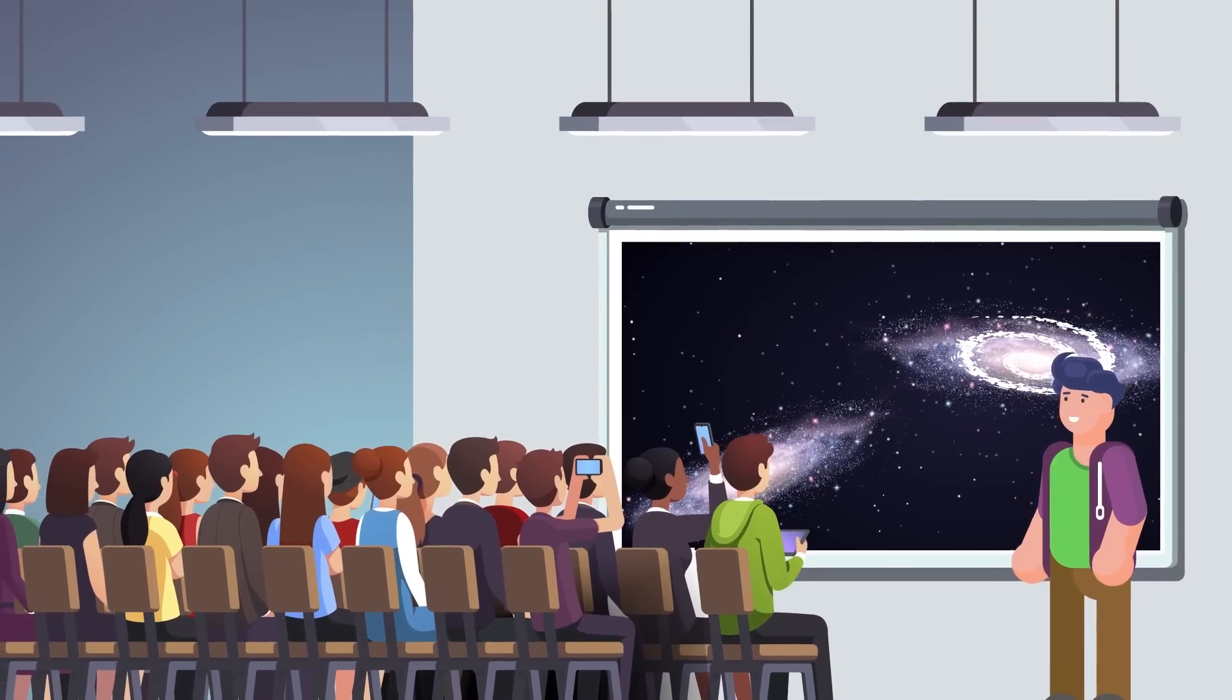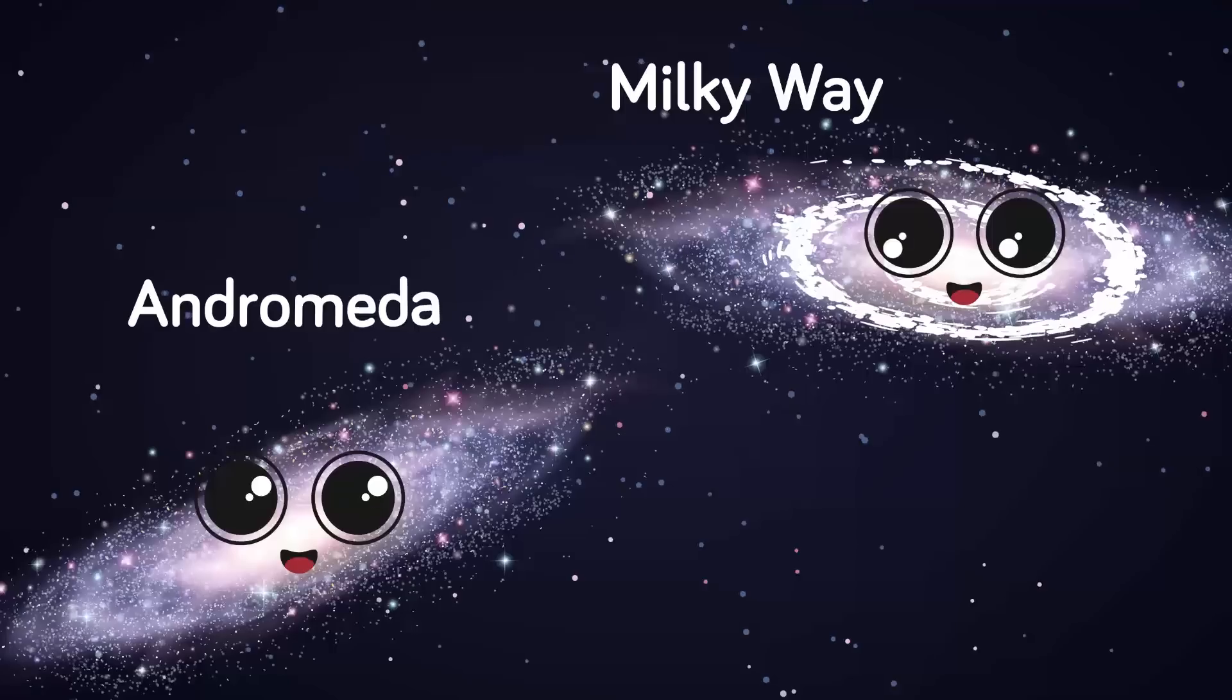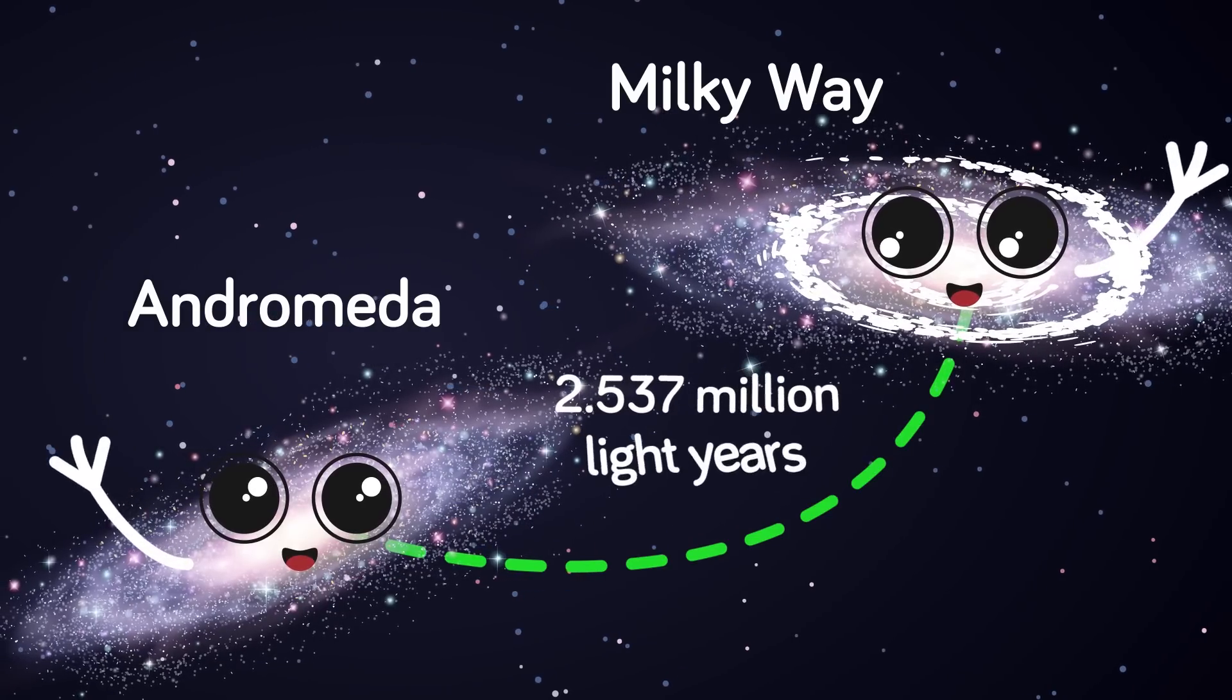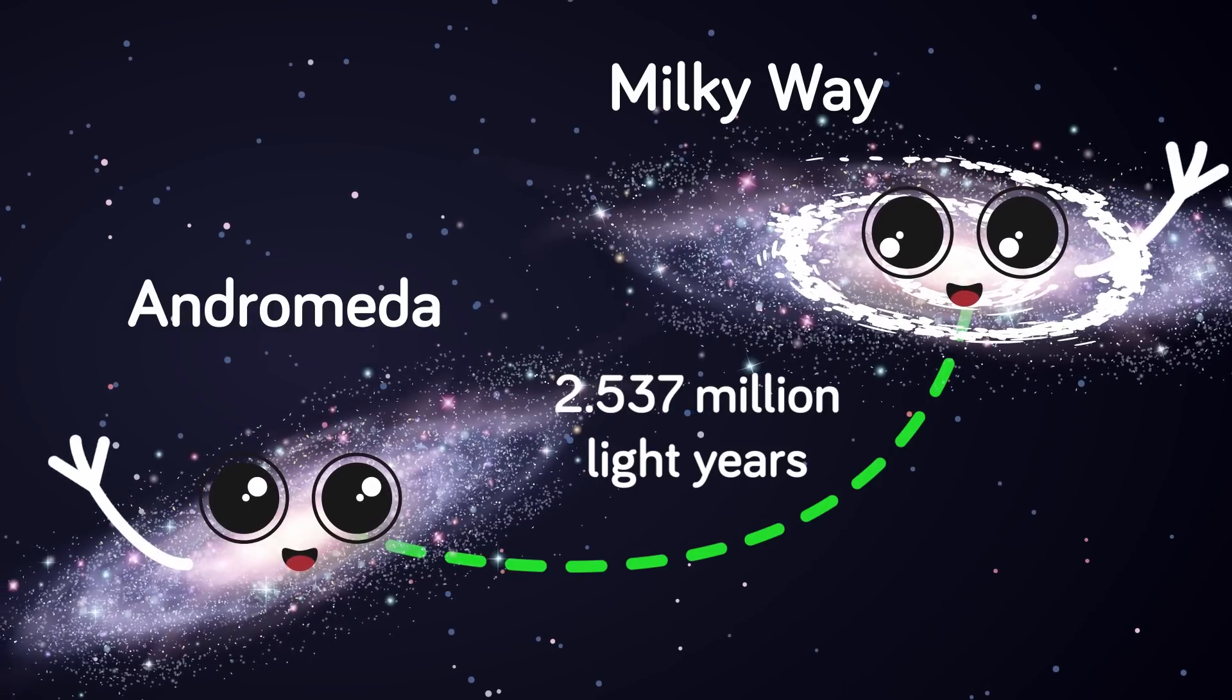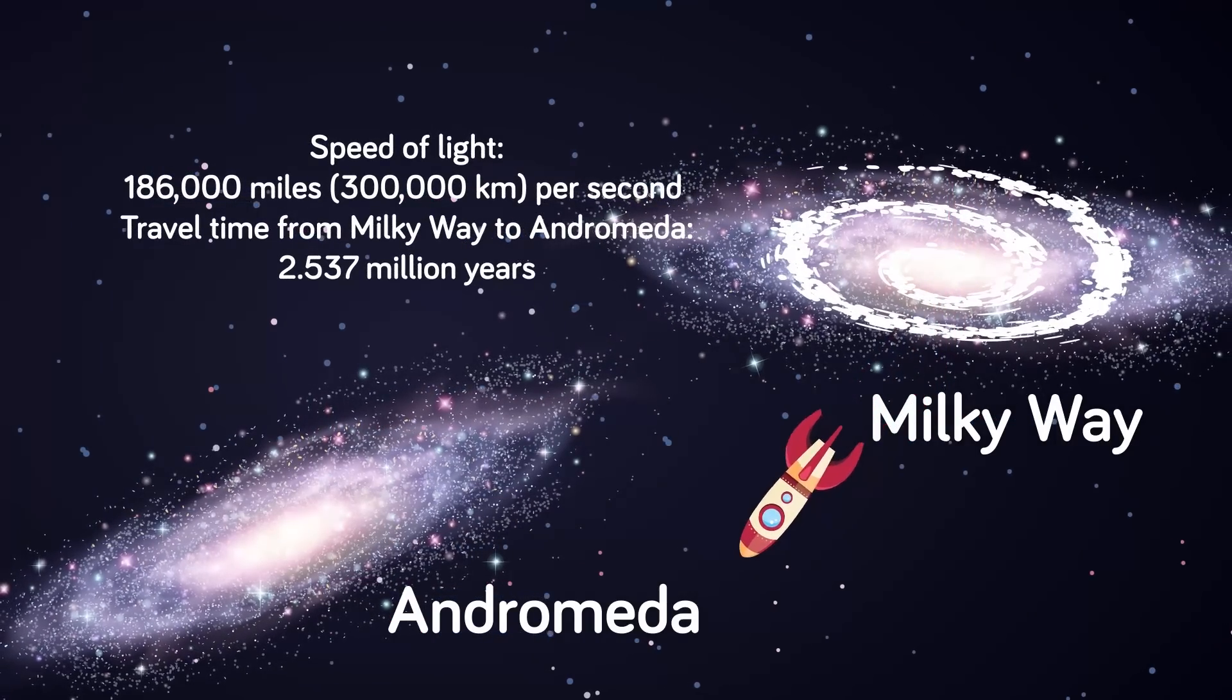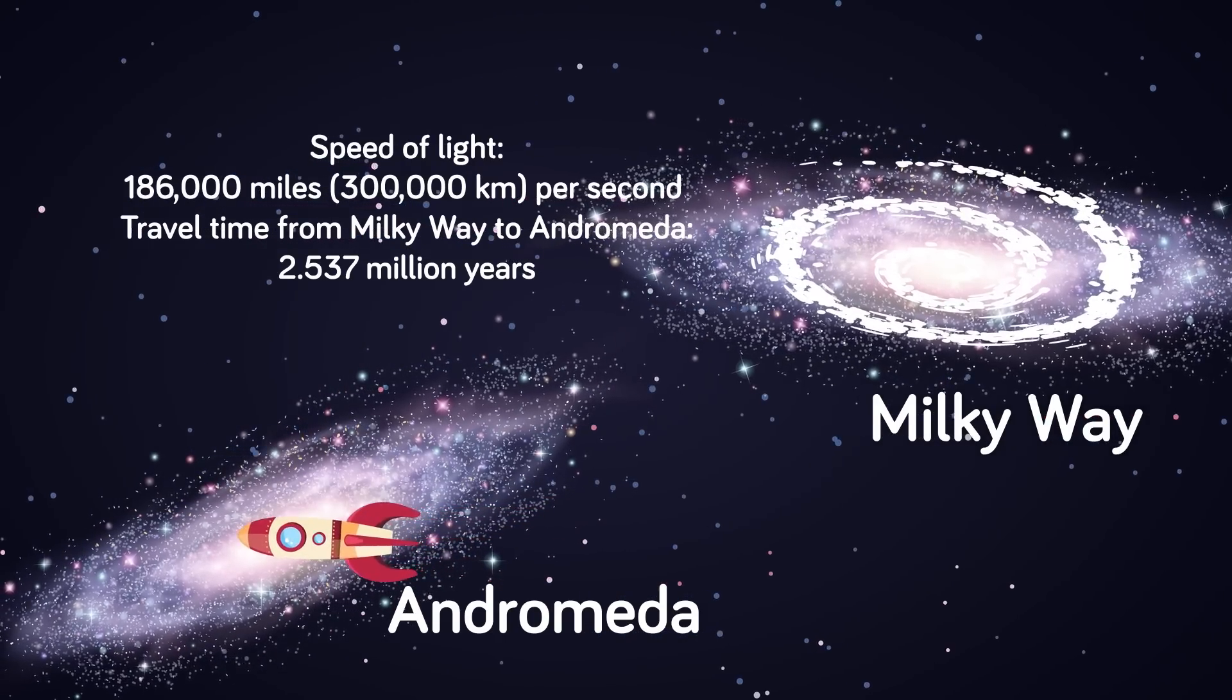The nearest galaxy to ours is called the Andromeda Galaxy, and that in terms of the bigger picture is just down the street. It's our closest neighbor, our bosom bigger buddy. If our galaxy wanted to borrow some milk it would just pop around to Andromeda, but it's actually 2.537 million light years away. A light year is the distance light travels in a year. That means if we traveled at the speed of light, which is approximately 186,000 miles per second, it would take us 2.537 million years to get there. And that's our next door neighbor.